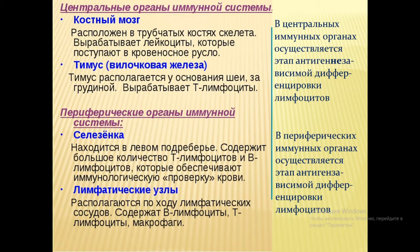В центральных первичных органах иммунной системы происходит зарождение иммунных клеток и их распространение в периферические органы. К периферическим, или вторичным, органам относятся селезёнка, все лимфатические узлы и скопления, лимфоидная ткань в кишечнике, в лёгких, по ходу лимфатических сосудов. Именно здесь лимфоциты приобретают направленность — кем им быть в борьбе с патогеном.